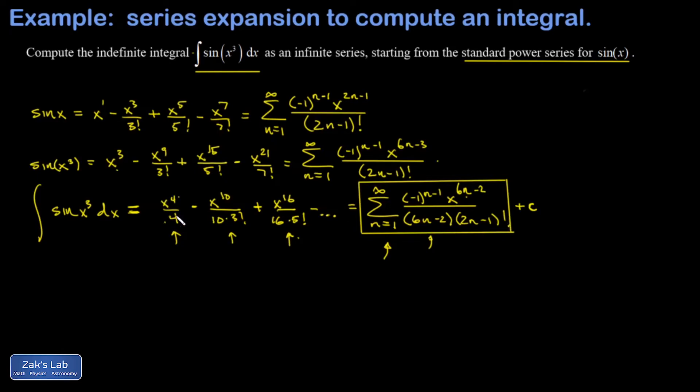Looking at one more of these, plugging in n equals 2 in my x term, I get x to the 12 minus 2, or x to the 10th, which I see here. The first term in the denominator is going to be 10, and I see that right here. The second term in the denominator, plugging in n equals 2, gives me 3 factorial, so that works as well. It looks like everything is working out.